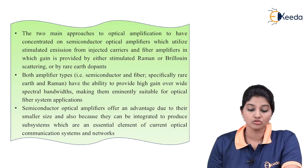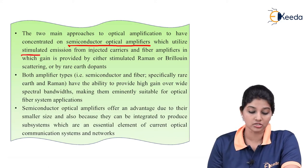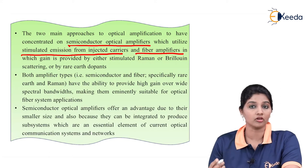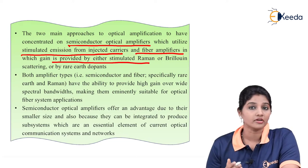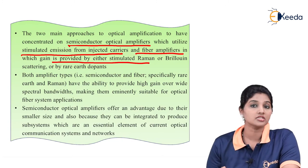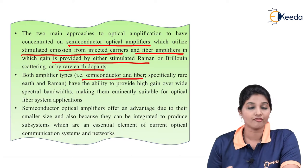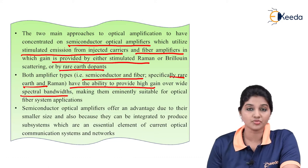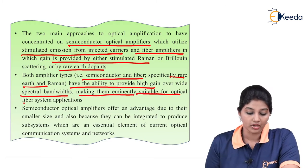There are two main approaches to optical amplification. The first focuses on the semiconductor optical amplifier, which basically utilizes stimulated emission from injected carriers. The second uses fiber amplifiers, in which the gain is provided either by stimulated Raman or Brillouin scattering — which we are already aware of — or it is also possible by using a rare earth dopant. Both types of amplifier — semiconductor and fiber, especially the rare earth dopant and Raman amplifiers — have the ability to provide high gain over a wide range of spectral bandwidth.